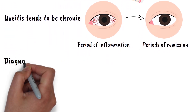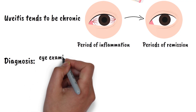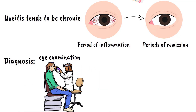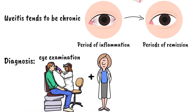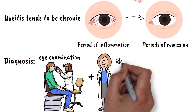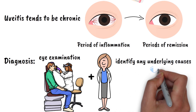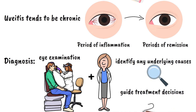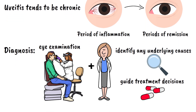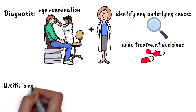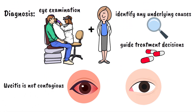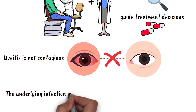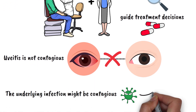The diagnosis of uveitis requires a comprehensive eye examination by an eye care professional, often in conjunction with other medical specialists. Because uveitis can be associated with so many different systemic conditions, the diagnostic process often involves extensive testing to identify any underlying causes and guide treatment decisions. Importantly, uveitis is not contagious — you can't catch it from someone else — though if it's related to an underlying infection, that infection might be contagious, so proper medical evaluation is always important.